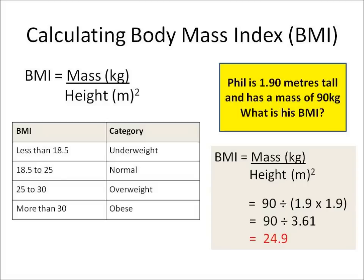So let's look through this example. Phil is 1.9 metres tall and has a mass of 90 kilograms. We need to work out his BMI. First of all I write down the equation: BMI equals mass divided by height squared. Then I put in the numbers — his mass is 90 and I divide that by his height squared, 1.9 times 1.9.